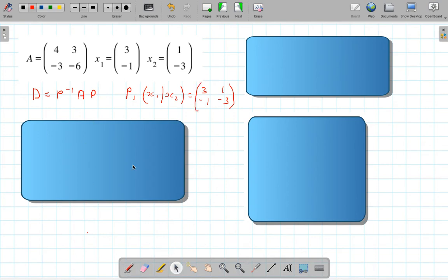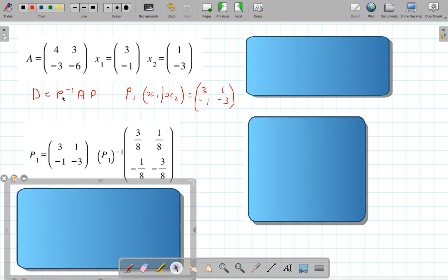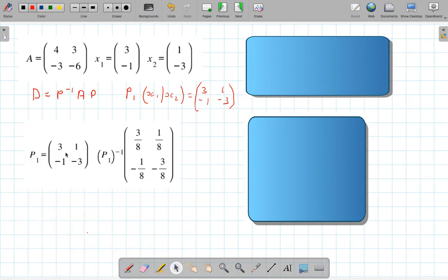So what's happening is I need P to the negative 1. So here I've got P and I find the determinant and then swap A and D and swap the signs of B and C. So I have the inverse of P1 to the negative 1.